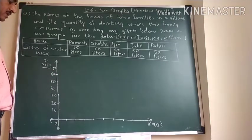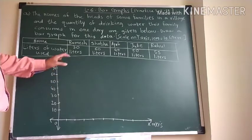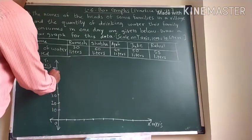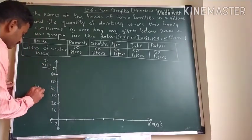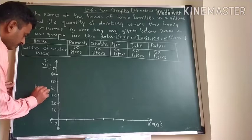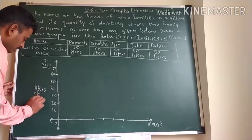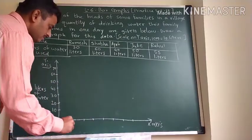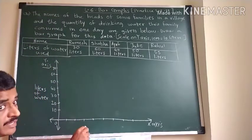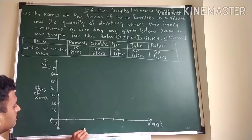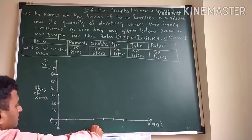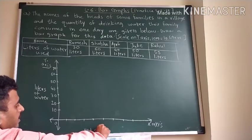Now on X axis we are going to write names of the heads of the families. Now what is this? These are the liters of water. Now on the X axis we are going to write heads of the family.